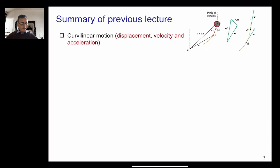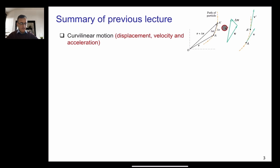From here, we can calculate the velocity, which is delta R divided by delta T. If we take the limit when time approaches zero, we get the instantaneous velocity. The instantaneous velocity, as you can see in this figure, is tangent to the path. At location A dash, the velocity is again tangent to the path. The velocity at A is V, and then we have some change in velocity, delta V. The final velocity is the addition of V and delta V. The velocities are vectors, so we use the head-to-tail rule to add them.